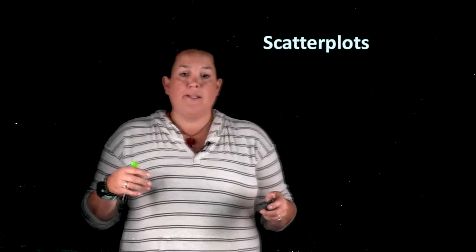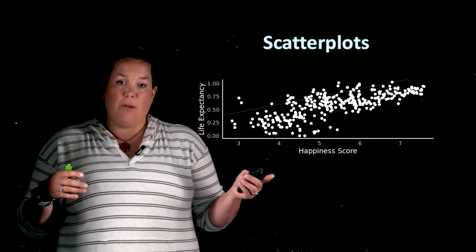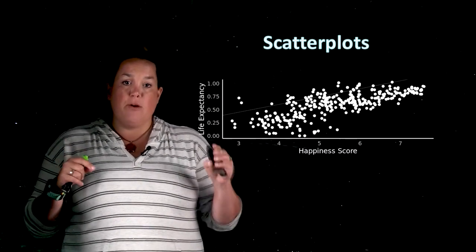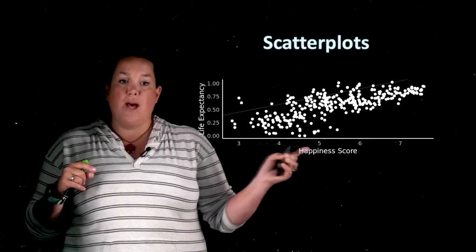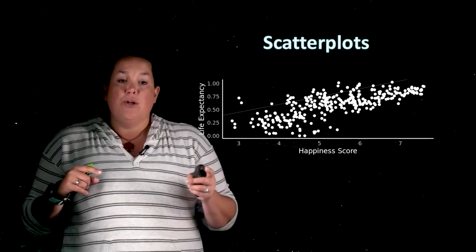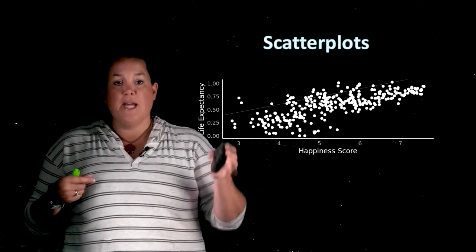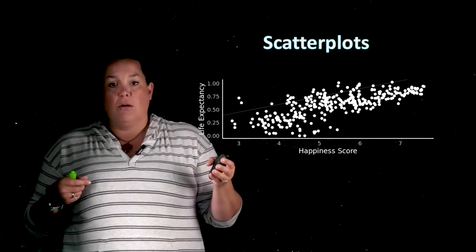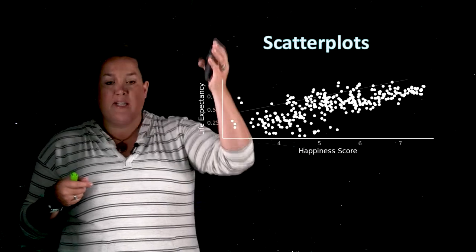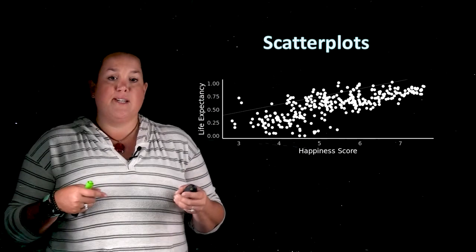So we're looking at just a simple scatterplot. If you remember, a scatterplot has two quantitative variables that are represented on both the x and y axis. So here, happiness score is a quantitative variable on the x axis, and then we have our life expectancy, which is a quantitative variable on the y axis.